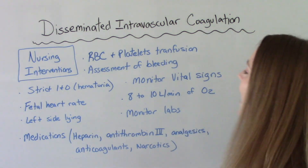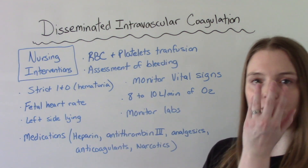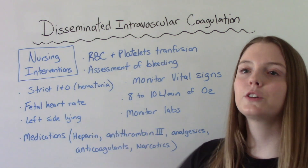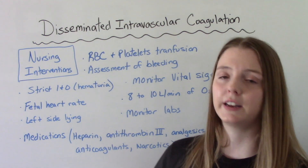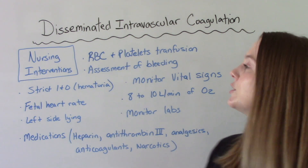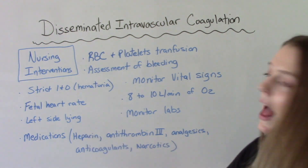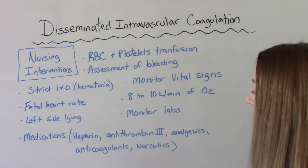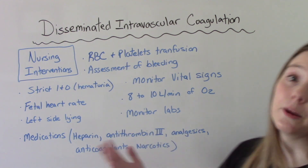For all patients, we're going to give oxygen — 8 to 10 liters via face mask. We're going to monitor those labs, doing serial blood studies frequently to see if the condition is getting worse or better. And of course, medications — as a nurse you might be giving heparin, antithrombin-3, analgesics, narcotics, and anticoagulants, which makes sense given the nature of the problem.